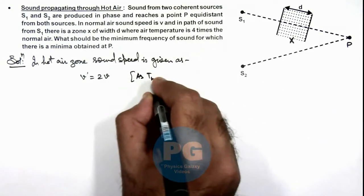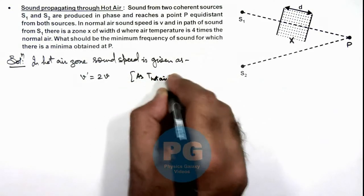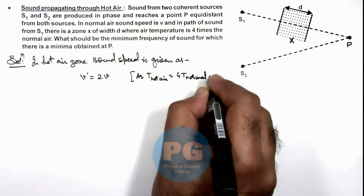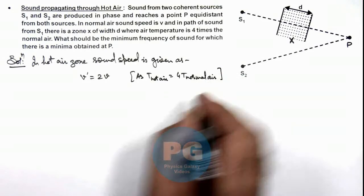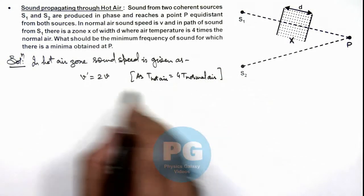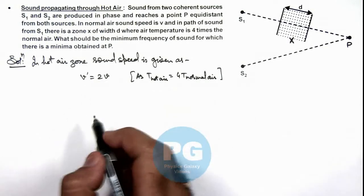So if temperature is 4 times, velocity of sound is directly proportional to square root of temperature, so this will be twice of the normal velocity.